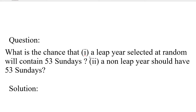So, what is the probability that a randomly chosen leap year has 53 Sundays? There are 366 days in a leap year. That is the first part. The second part is: a non-leap year should have 53 Sundays, and we know a non-leap year has 365 days.